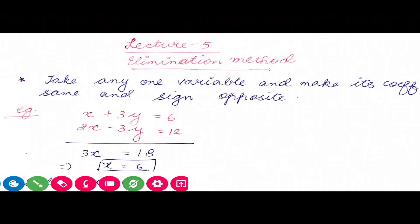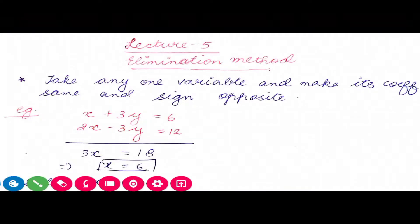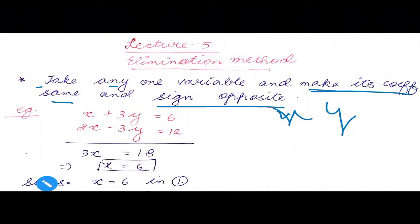Hello everyone, so this is the fifth lecture where we will study the elimination method — a method to solve linear equations in two variables. As the name suggests, we have to eliminate one of the variables. When we deal with a system, we have two variables, either x,y or u,v or m,n. The rule of elimination: you need to take any one variable, make its coefficient the same and the sign opposite.